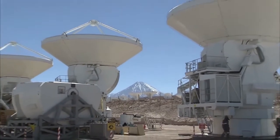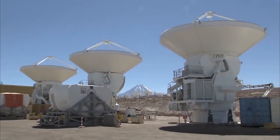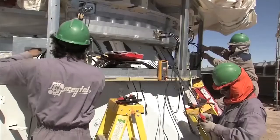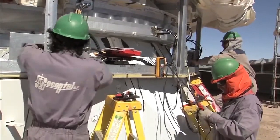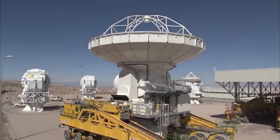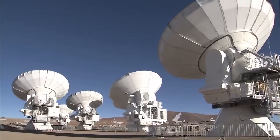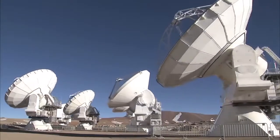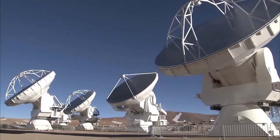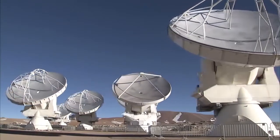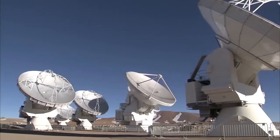Over the coming year, the sharpness, speed and quality of its observations will increase dramatically as more antennas become available and the array grows in size. But even with only part of the array in operation, this is already the best sub-millimeter wavelength image ever made of the Antennae galaxies.